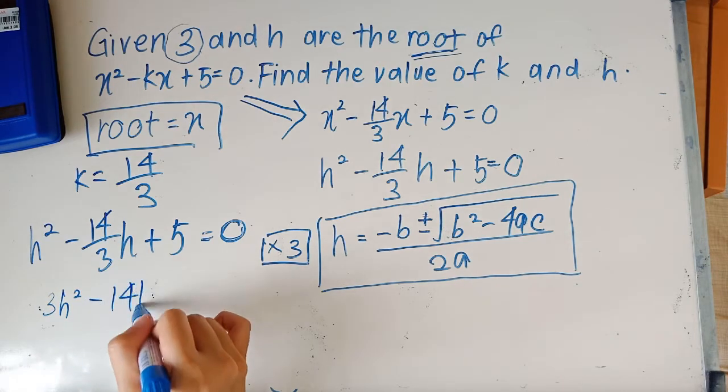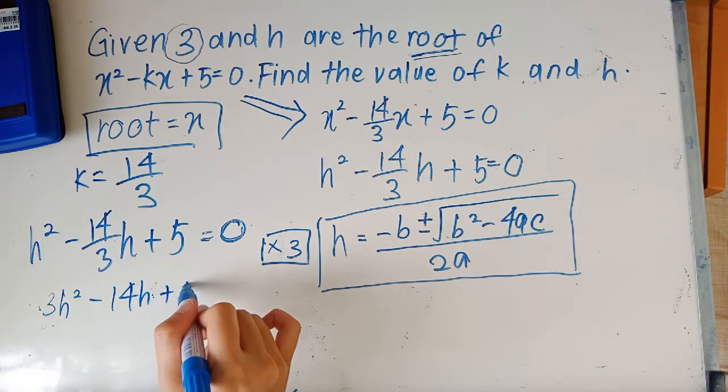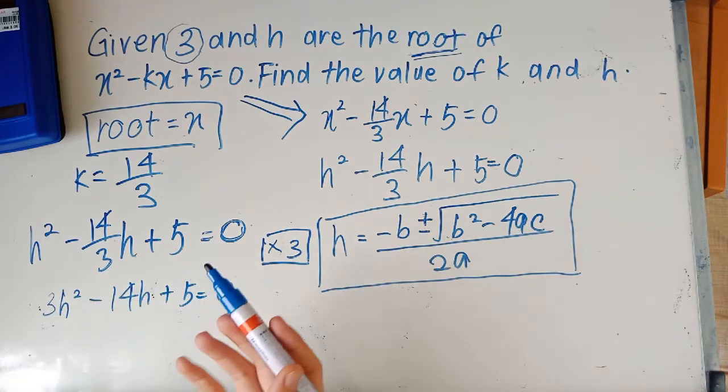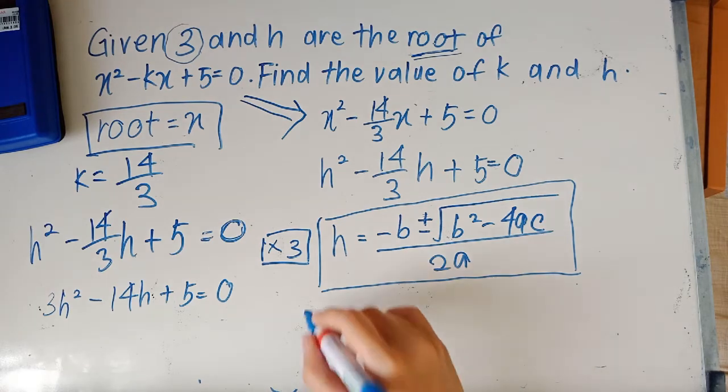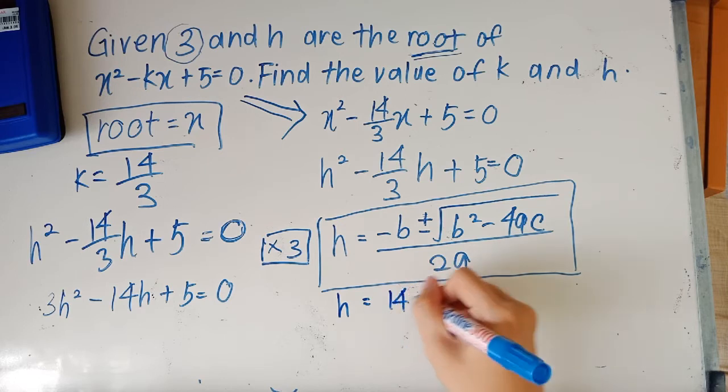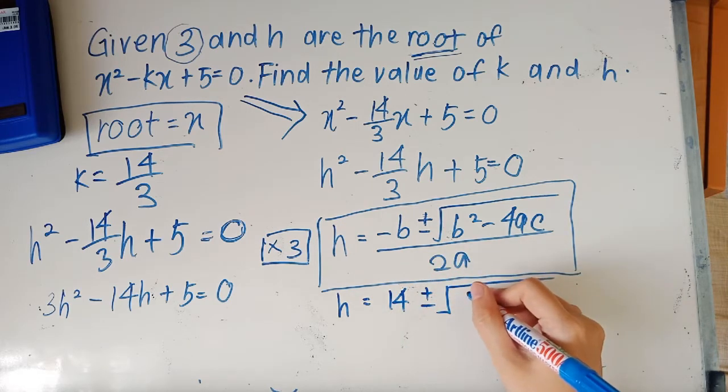Now that you have all whole numbers and not fractions, it will just make your life a lot easier. And so continue here: negative b plus minus b² - 4ac, just substitute it.